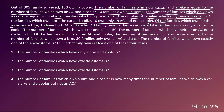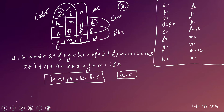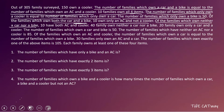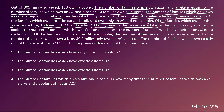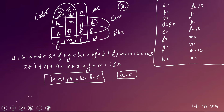Of the families which own neither a car nor a bike — that is, only cooler, only AC, and only cooler-and-AC regions (A, I, B) — 10 have both AC and a cooler, meaning only I. So I = 10. Also, 40 families own neither a car nor a bike, so A + I + B = 40. Since I = 10, A + B = 30.